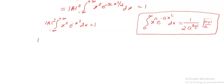So this integral can be written as mod A square. Observe here we have x square into e to the power minus x square. Now x square is an even function and e to the power minus x square is Gaussian and also an even function. So the given integral can be written as 2 times the integral from 0 to plus infinity of x square e to the power minus x square dx, equal to 1. This follows from the property of even function integrals.